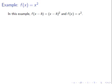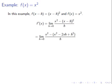Let's compute the left-hand derivative of f of x equals x squared. Here, f of x minus h equals x minus h squared and f of x equals x squared. We plug into our difference quotient formula: f prime of x equals the limit as h approaches 0 of x squared minus x minus h squared over h. We expand x minus h squared into x squared minus 2xh plus h squared by distributing twice or foiling. We notice the x squared cancels, and we get 2xh minus h squared over h.